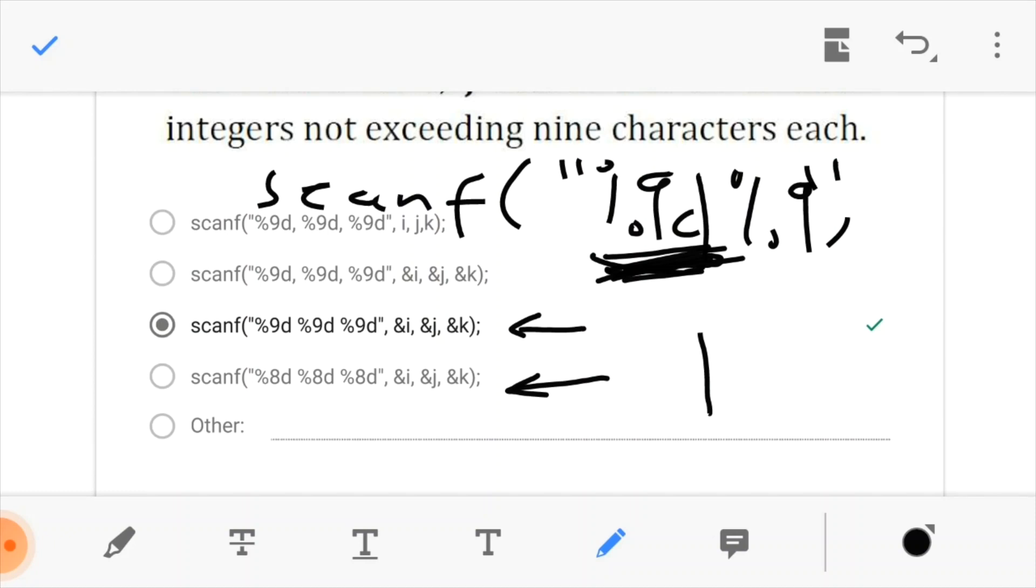So now, since we have told the program what data we are expecting from the user, it starts to reason that when we take the data from the user, we have to put it somewhere. Now, this is where our receptor variables come in.